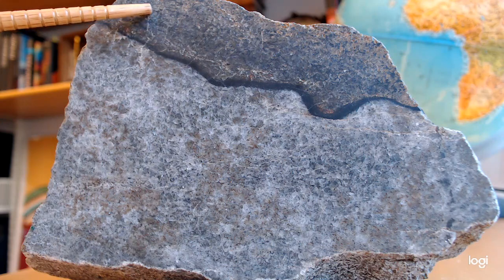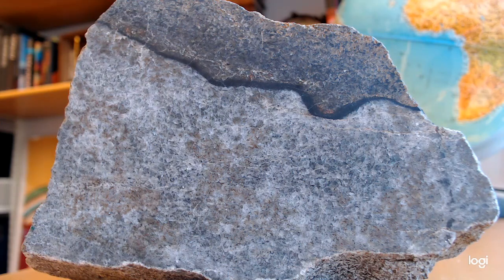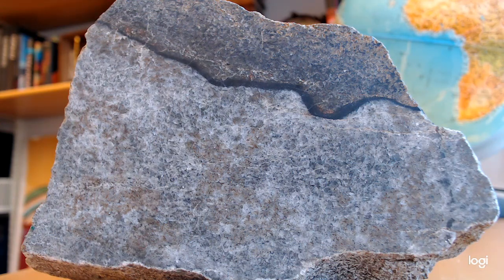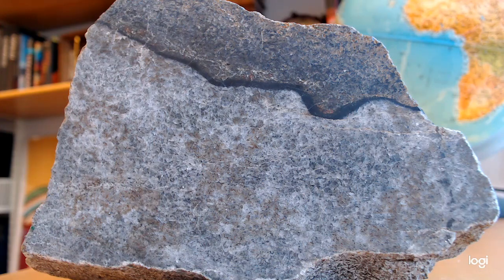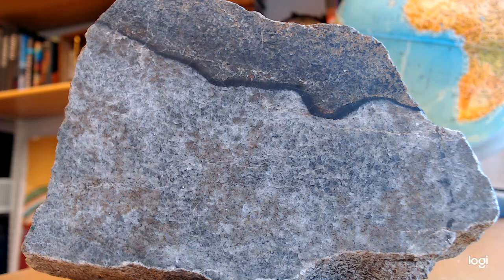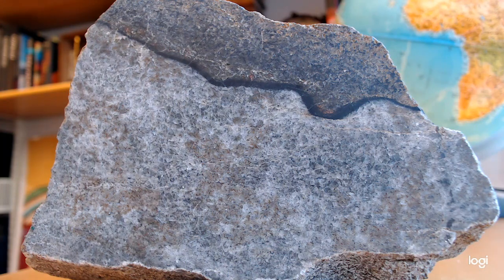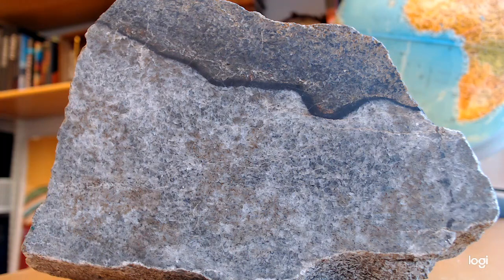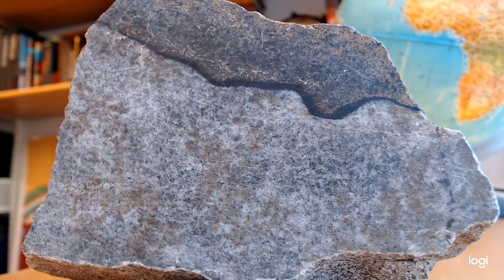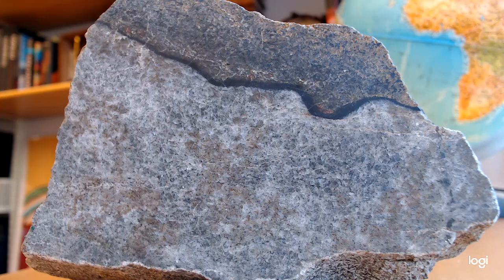Now up here we have a peridotite, and this is a rock that's rich in olivine. It has a little bit of feldspar but it's dominated by olivine - a feldspathic peridotite. This material below would continue for quite some time, many tens of meters, and the material above would also continue for quite some time.